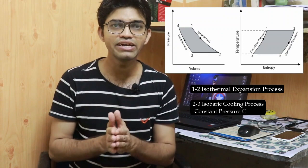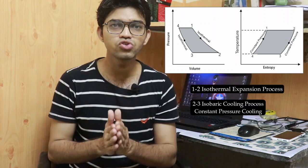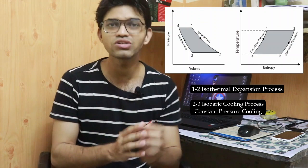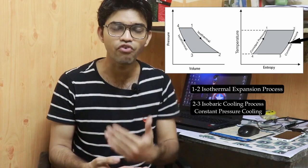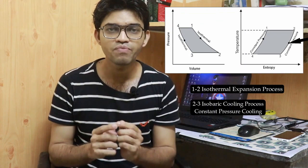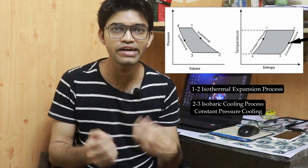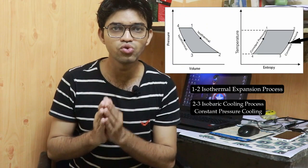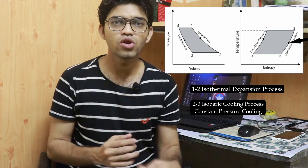After isothermal expansion, process 2 to 3 is constant pressure cooling. Heat gets rejected from the combustion chamber to the outer atmosphere. Temperature falls down while pressure remains constant, and the piston moves toward compression so volume reduces. This process 2 to 3 is a constant pressure reversible — isobaric — process where volume reduces at constant pressure.